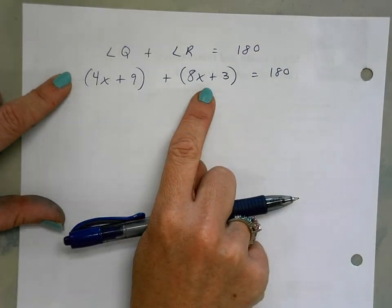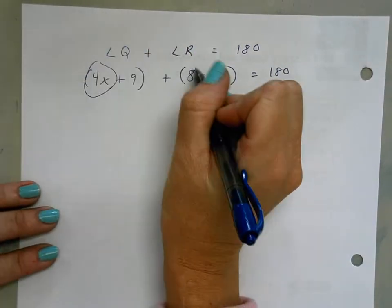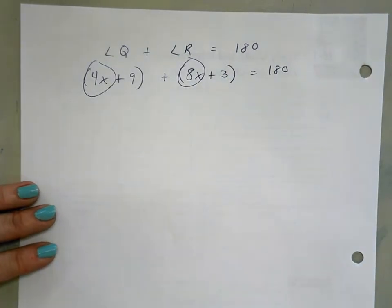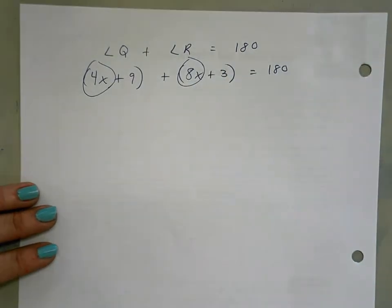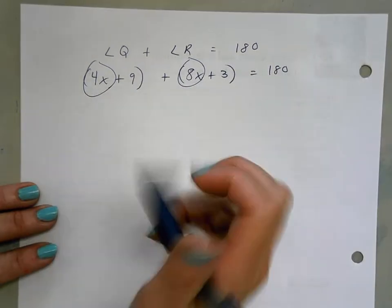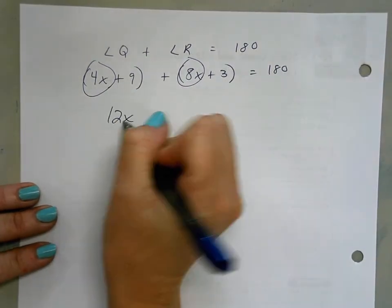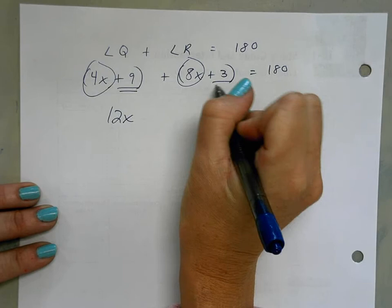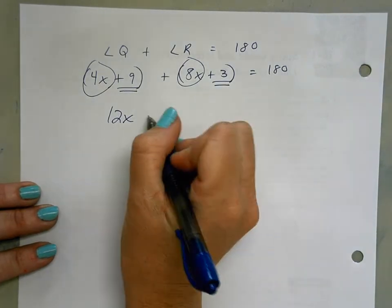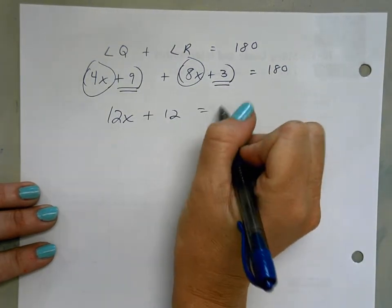Now I'm going to combine my like terms. So 4x plus 8x - not 2x, 4 plus 8 is 12x. Then I can combine my whole numbers, so 9 plus 3 is 12, and that equals 180.